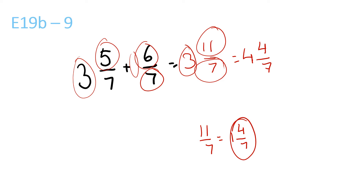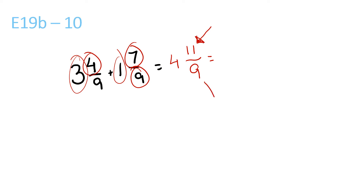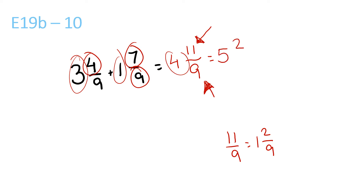I know it's quite a lot to remember, but after watching a couple of my videos, guaranteed you will get it. 3 plus 1 is 4. 7 plus 4 is 11, over 9, because the 9 stays the same. Since the top one is larger than the bottom one, you can convert it into a mixed number. 11 over 9 — 9 goes into 11 once with a remainder of 2 over 9. So 1 and 2 over 9 plus 4 is equal to 5 and 2 over 9.